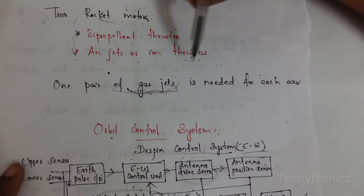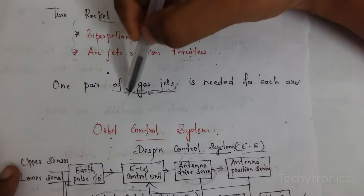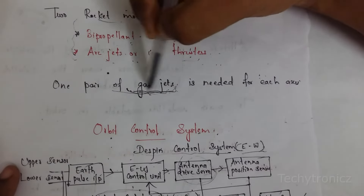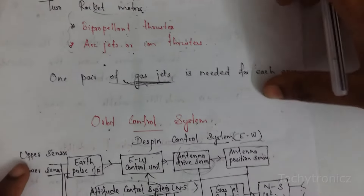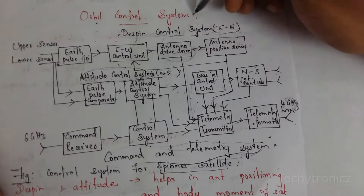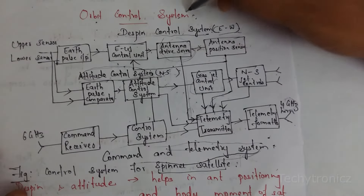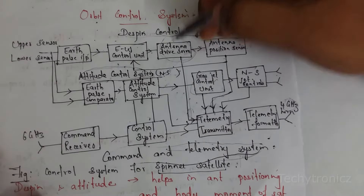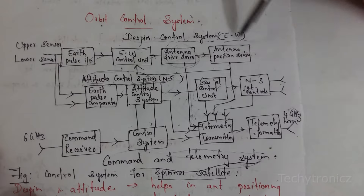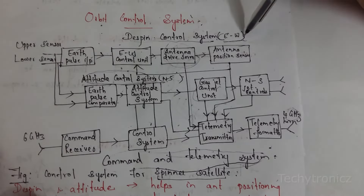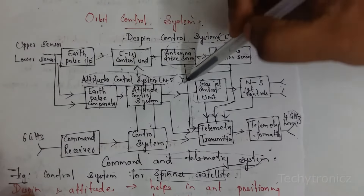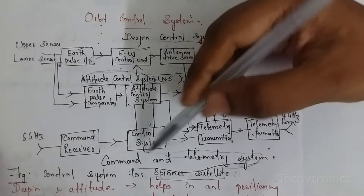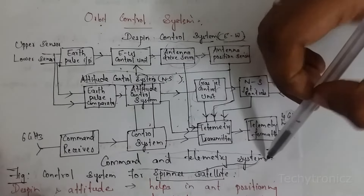In all axes, one pair of gas jets is used. In the block diagram, the orbit control system has three sections: the east-west control system, the attitude control system operating in the north-south direction, and the command and telemetry system.